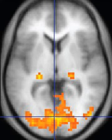MRI for imaging anatomical structures or blood flow does not require contrast agents as the varying properties of the tissues or blood provide natural contrasts. However, for more specific types of imaging, exogenous contrast agents may be given intravenously, orally, or intra-articularly. The most commonly used intravenous contrast agents are based on chelates of gadolinium. In general, these agents have proved safer than the iodinated contrast agents used in X-ray radiography. Anaphylactoid reactions are rare, occurring in approximately 0.03 to 0.1%. Of particular interest is the lower incidence of nephrotoxicity, compared with iodinated agents, when given at usual doses.